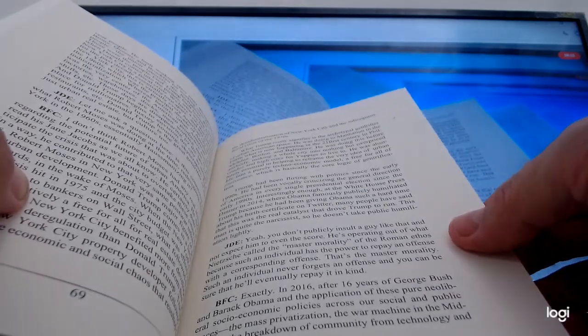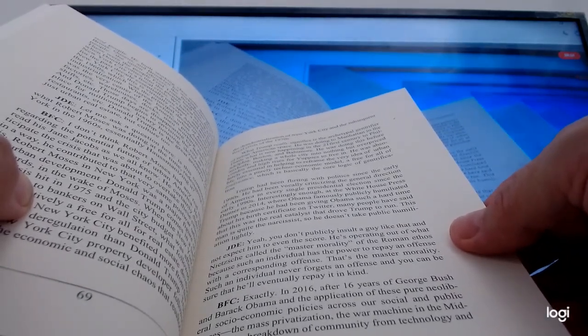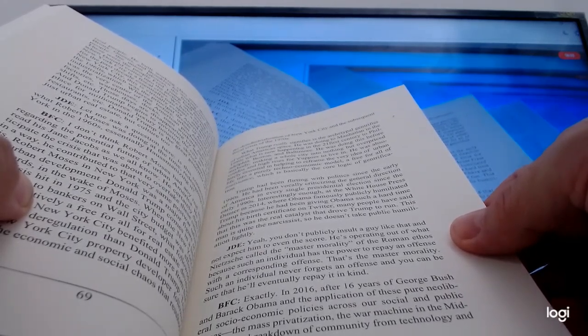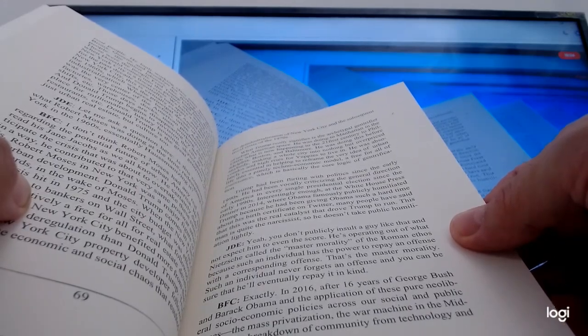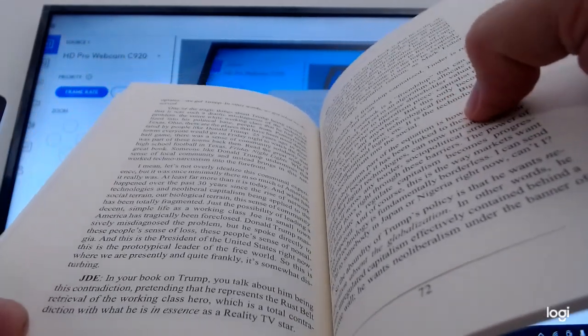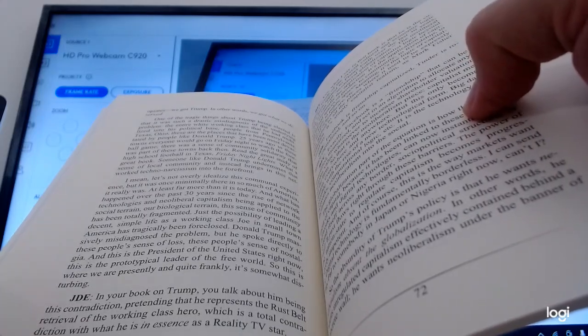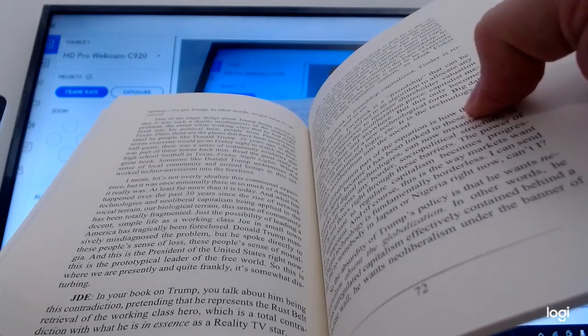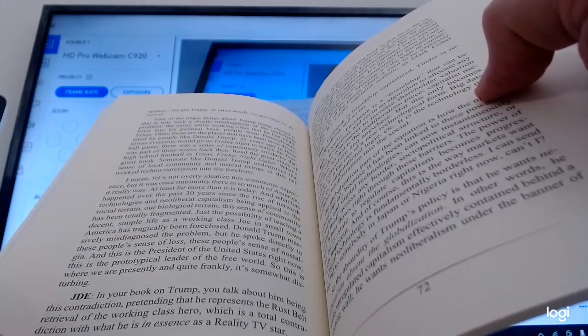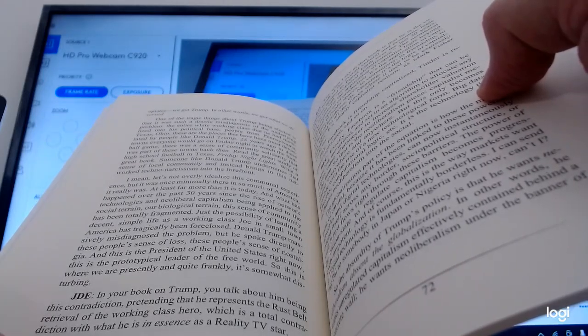Trump had been flirting with politics since the early 90s. He had been vocally criticizing the general direction of America in every single presidential election since the early 90s. Interestingly enough, at the White House press dinner in 2014, where Obama famously publicly humiliated Trump because he had been giving Obama such a hard time about his birth certificate on Twitter, many people have said that this was the real catalyst that drove Trump to run. This man is quite the narcissist, so he doesn't take public humiliation lightly. Ebert: Yeah, you don't publicly insult a guy like that and not expect him to even the score.